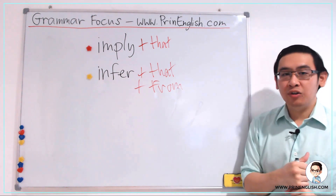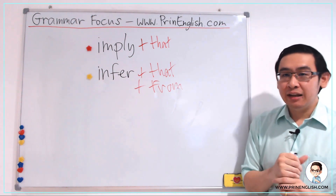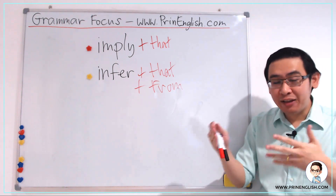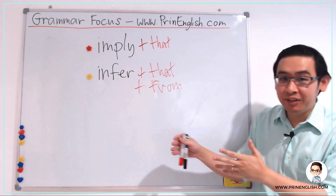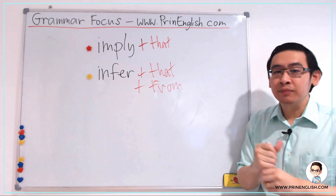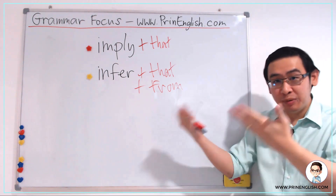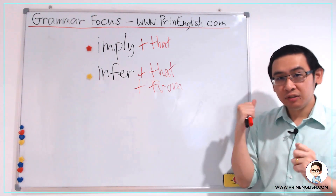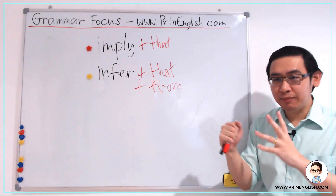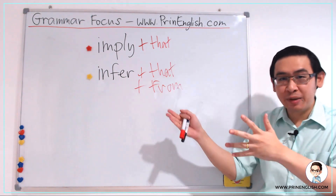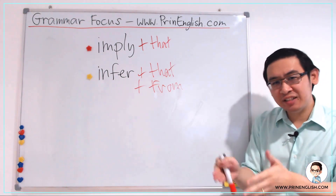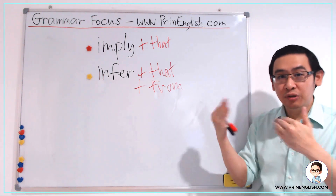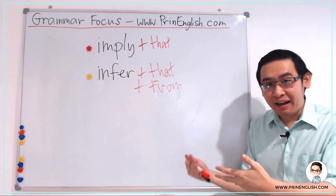Maybe you hear something and then you try to summarize it — that's inferring. But if you express something indirectly, that's implying. If you are the speaker of that message, you can imply — you can say something implicitly without being direct. But if you want to infer, you have to be the listener, because you listen and then you think and try to summarize from all the information you have. So as you can see: if you're a listener, you infer; if you're the speaker, you imply.